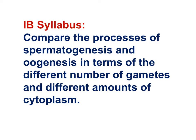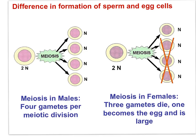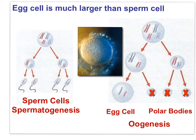The next IB syllabus statement: compare the processes of spermatogenesis and oogenesis in terms of the different number of gametes and different amounts of cytoplasm. Spermatogenesis, through two meiotic divisions, results in four small spermatozoa. Oogenesis — egg formation — through two meiotic divisions, does not result in four eggs. Instead, the cytoplasm is unevenly divided: one large egg is formed along with three polar bodies that degenerate.